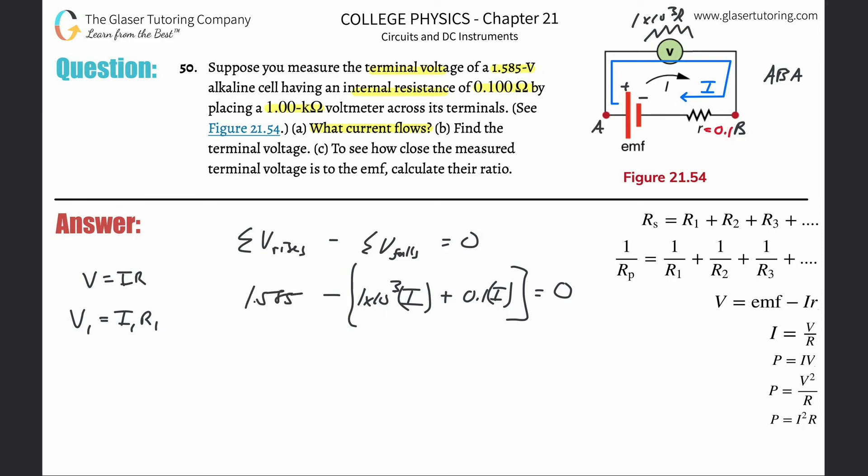Now if you take a step back and realize what we have: we have 1.585 minus then 1 × 10³ I plus 0.1 I equals 0. One equation with one unknown—this is now solvable. Let's add these two together. I'm going to use the exact values. Wait, that should have been a negative sign because I have to distribute that to each term, and